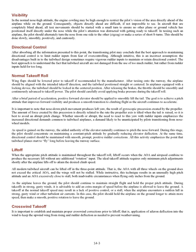Visibility: in the normal nose-high attitude, the engine cowling may be high enough to restrict the pilot's vision of the area directly ahead of the airplane while on the ground. Consequently, objects directly ahead are difficult, if not impossible to see. In aircraft that are completely blind ahead, all taxi movements should be started with a small turn to ensure no other plane or ground vehicle has positioned itself directly under the nose while the pilot's attention was distracted. In taxiing such an airplane, the pilot should alternately turn the nose from one side to the other — zigzag, or make a series of short S-turns — slowly, smoothly, positively, and cautiously.